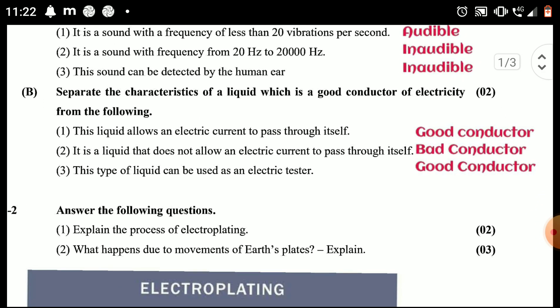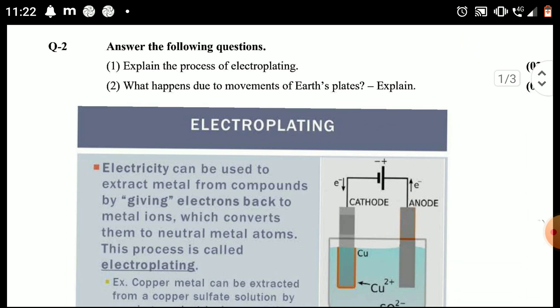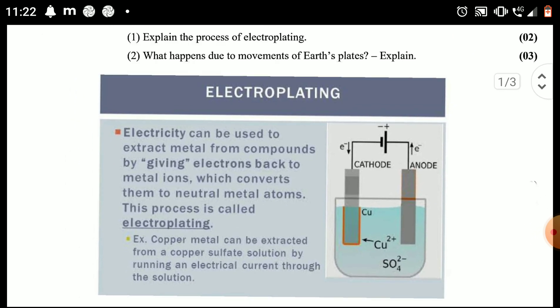This liquid allows an electric current to pass through itself - good conductor. It is a liquid that does not allow an electric current to pass - bad conductor. A type of liquid can be used as an electric tester - good conductor. Now explain the process of electroplating.